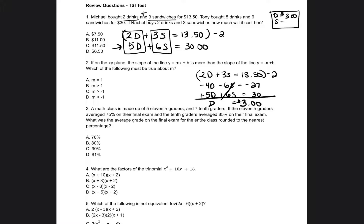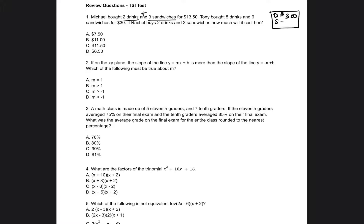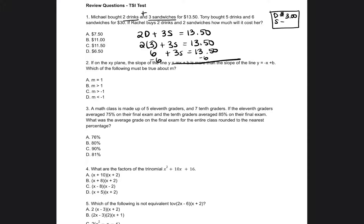Now I'll figure out how much the sandwiches cost. Going back to the first equation: 2D plus 3S equals $13.50. I'll substitute $3 in for D — so 2 times 3 plus 3S equals $13.50. 2 times 3 is 6, so 6 plus 3S equals $13.50. I subtract 6 from both sides: $13.50 minus 6 equals $7.50. Then I divide both sides by 3, and S equals $2.50. So each sandwich costs $2.50.